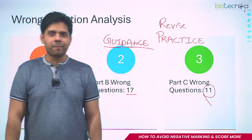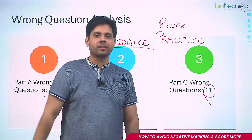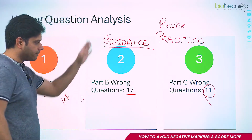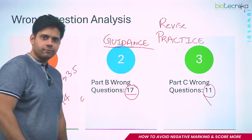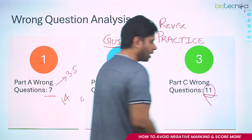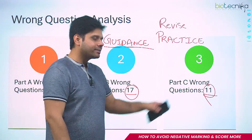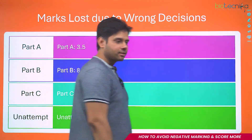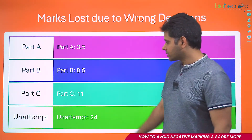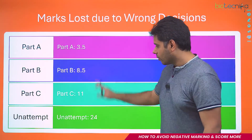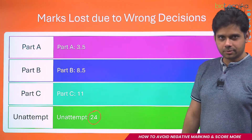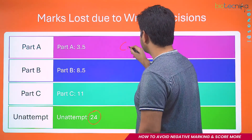If you think you'll qualify next exam, keep this data in mind. If you are committing mistakes in Part B and Part C, it won't work. Summary of Harshita's mistakes: Part A — lost 3.5 marks; Part B — lost around 8.5 marks; Part C — lost around 11 marks; and she did not attempt 6 Part C questions — total 24 marks lost. The biggest flaw is concept clarity.